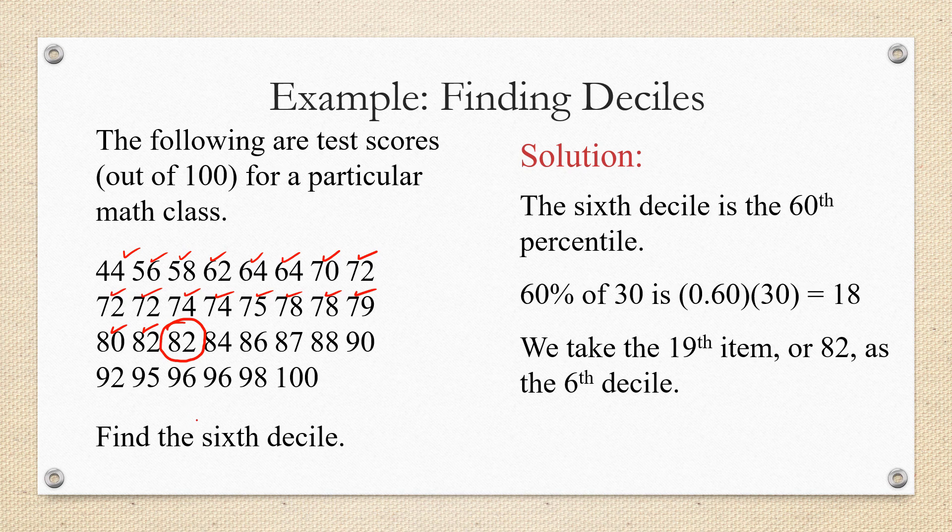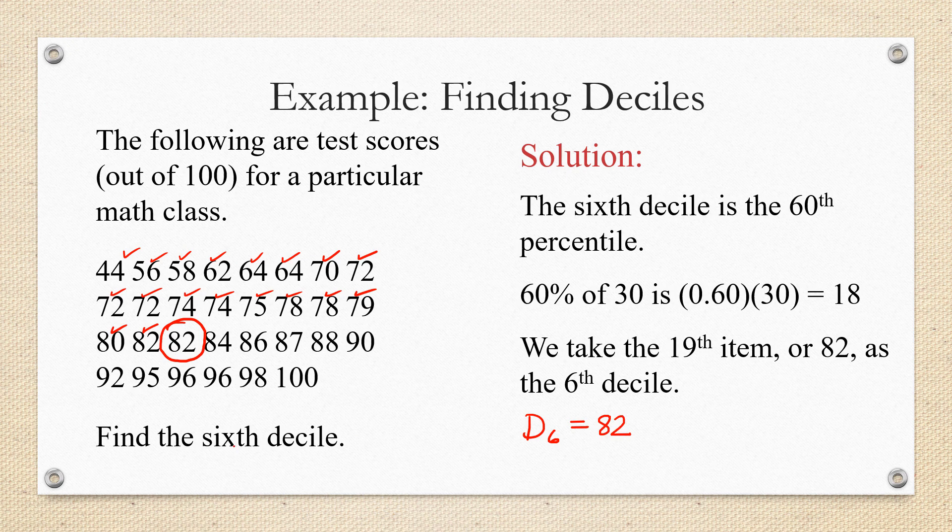We want the data value right above that, which is going to be 82, the 19th item in the set. So 82 is considered our sixth decile, which by the way could be denoted as D6. So we could write D6 equals 82.